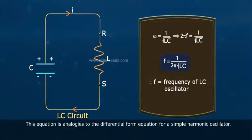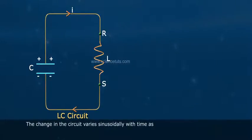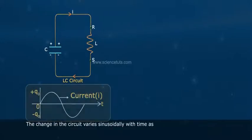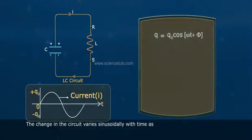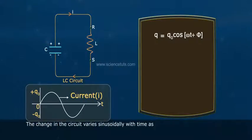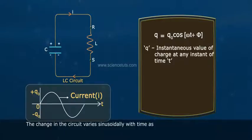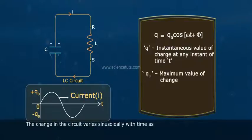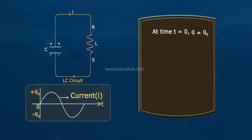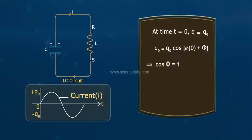F is the frequency of the LC oscillator. The charge in the circuit varies sinusoidally with time as Q equals Q₀·cos(ωT + φ), where Q is the instantaneous charge at any instant T, Q₀ is the maximum charge, and φ is the phase constant. At time T equals 0, Q equals Q₀, so Q₀ equals Q₀·cos(φ), which gives cos φ equals 1, meaning φ equals 0°.